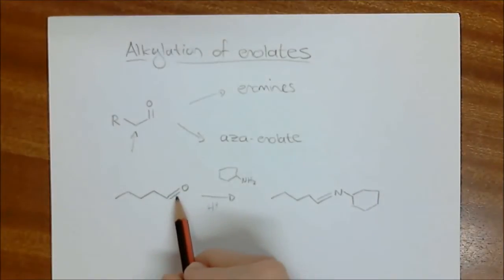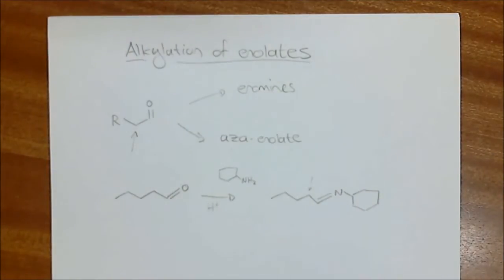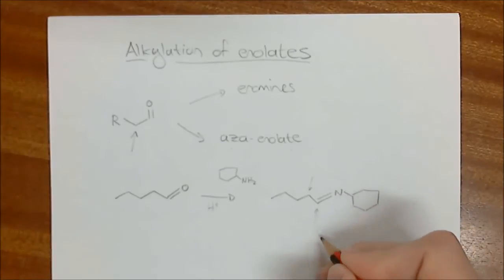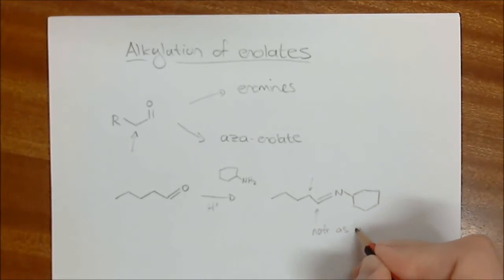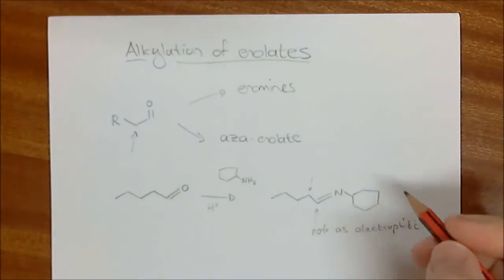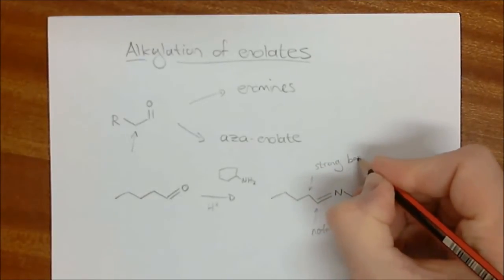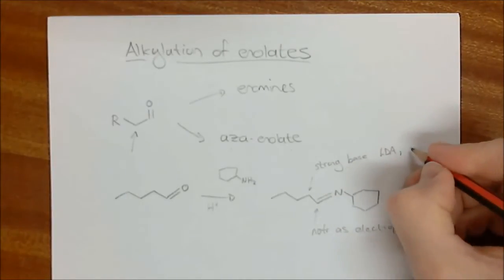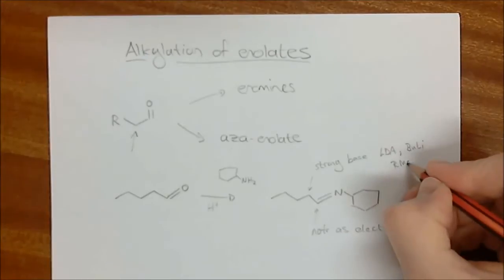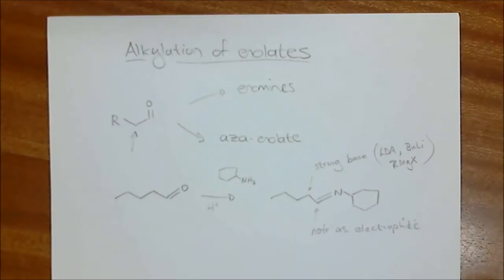We generate the imine, which is effectively the nitrogen equivalent of the aldehyde. In exactly the same way as we can deprotonate on the aldehyde — but we know that causes problems — we can deprotonate at the alpha position of the imine. The reason we don't have problems here is that this nitrogen center is not electrophilic, in fact it's very poorly electrophilic. We need a fairly strong base: our go-to LDA is a very good option, but alkyl lithiums like butyllithium and Grignard reagents (RMgX) also work.